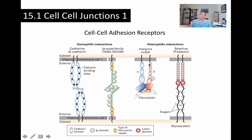In heterophilic interactions, the receptor on one cell is different from the receptor on the other structure, which can be a cell surface or the extracellular matrix. Here we've got proteins called integrins, which are involved in attaching cells to the extracellular matrix. This is an alpha-5-beta-3 integrin receptor protein attached to fibronectin in the extracellular matrix — the two molecules are different, so that's a heterophilic or heterotypic interaction. Similarly, this is a P-selectin, which binds to the sugars of a glycoprotein on the surface of another cell, such as an endothelial cell — again a heterophilic interaction.